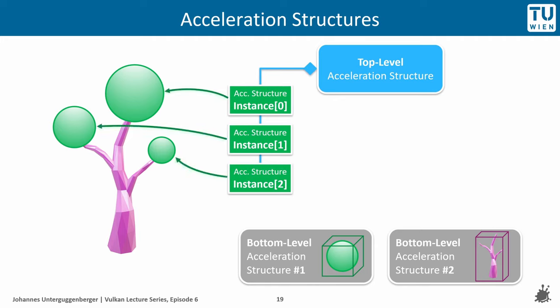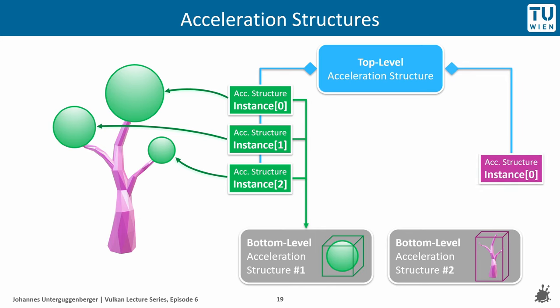The top-level acceleration structure, which represents the whole scene, is composed of different instances of these bottom-level acceleration structures. In this example, it is composed of three instances of bottom-level acceleration structure number one, where each instance references the actual bottom-level acceleration structure. In addition, we add one instance of the other bottom-level acceleration structure, which is number two.